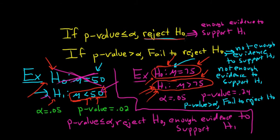Whenever you reject H₀, there is enough evidence for H₁. If you fail to reject H₀, there is not enough evidence for H₁. I hope this video has helped you in some way. Thanks for watching.